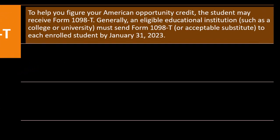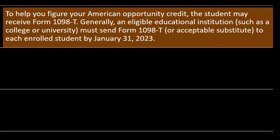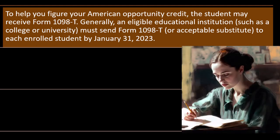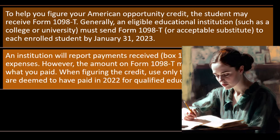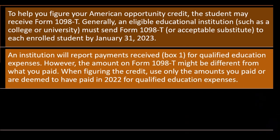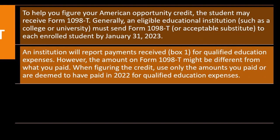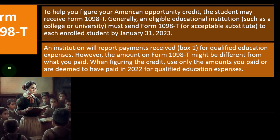To help figure your American Opportunity Credit, the student may receive Form 1098-T from the educational institution. Generally, an eligible educational institution such as a college or university must send Form 1098-T to each enrolled student by January 31, 2023. The institution will report payments received in Box 1 for qualified education expenses. However, the amount on Form 1098-T might differ from what you paid — use only the amounts you paid in 2022 for qualified education expenses.